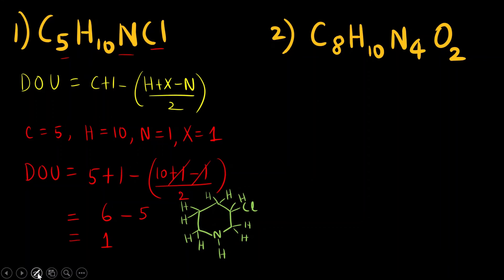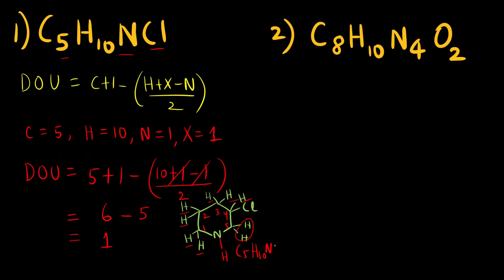Drawing the structure of this compound, counting carbons gives 5, hydrogens gives 10, 1 nitrogen and 1 Cl — matching the molecular formula. Looking at the structure, there is only 1 ring, so the degree of unsaturation is 1. This confirms the formula gives the same answer as examining the structure.